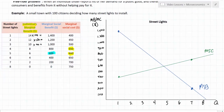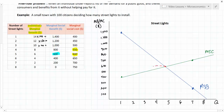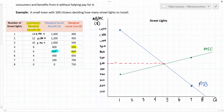Now comparing the marginal social cost and the marginal social benefit of street lamps, it's easy to find the socially optimal quantity that should be provided. Right at around six hundred dollars, the marginal social benefit equals the marginal social cost, which occurs at an equilibrium quantity of around five street lamps. So the socially optimal quantity — QSO — occurs where marginal social cost equals marginal social benefit.